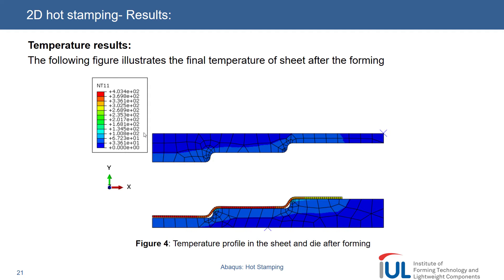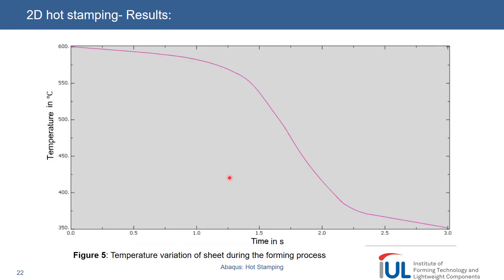Let's talk about some of the results. We're looking at the nodal temperature distribution here. This is the nodal temperature distribution after the process, after the die has retracted completely. You can see the temperature difference - the distribution of the die and the sheet - because the temperature is very much lower at certain locations compared to all others. This is the location where the die was already in contact from the start, so it lost almost maximum heat compared to other locations. In the coming slides you'll see the temperature variation of the sheet.